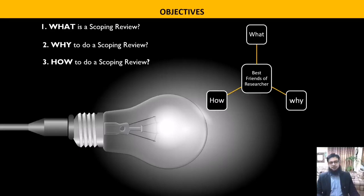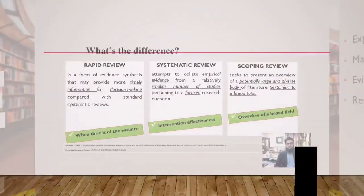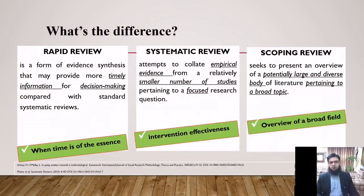There are various types of knowledge synthesis tools. Our focus today is on scoping reviews. According to the Canadian Institute of Health Research, scoping reviews are exploratory projects that systematically map the literature available on a topic, identifying key concepts, theories, sources of evidence, and gaps in the research. Without going into detail of all knowledge synthesis tools or types of reviews, it is still essential to know the basic differences because it can help you see what you actually need to target and work on.